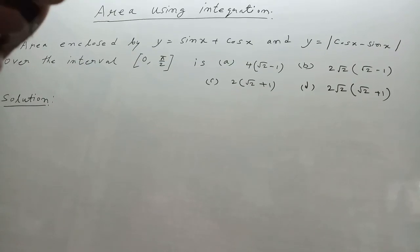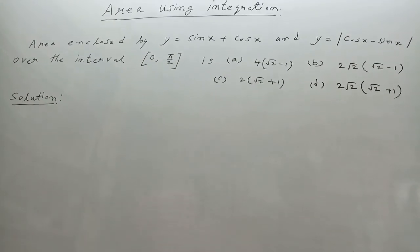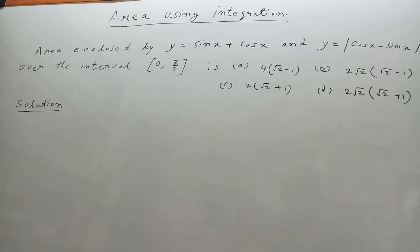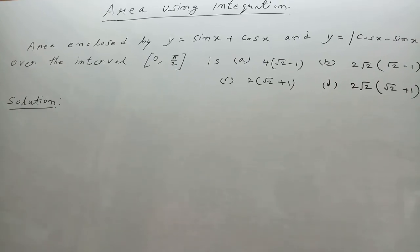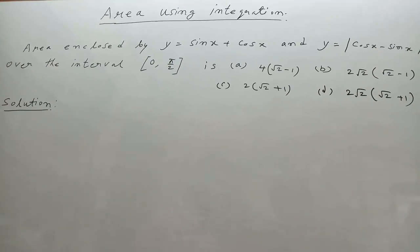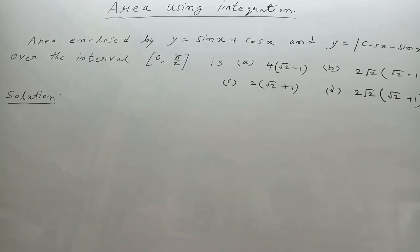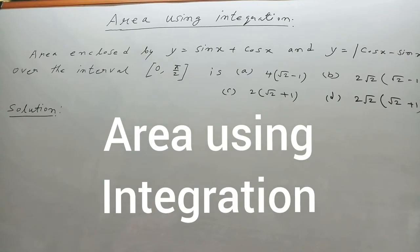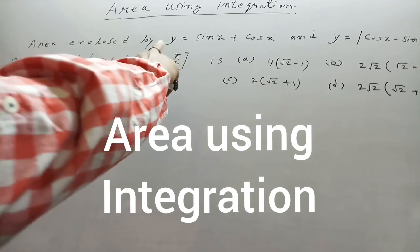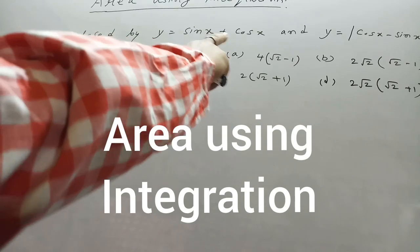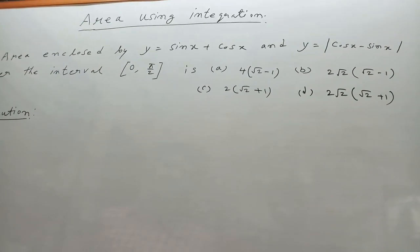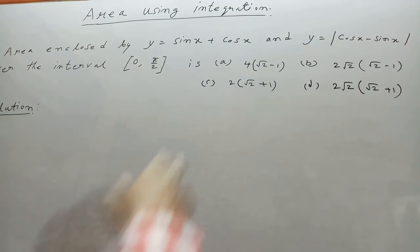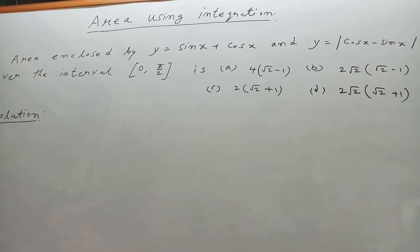Welcome to Inspired Mathematics classes. Students will start a special type of sum regarding area. Using integration, how you can find an area, we discussed in a previous video lecture. The starting sum is: find the area enclosed by y = sin x + cos x and y = |cos x - sin x| over the interval 0 to π/2. We will start the solution.